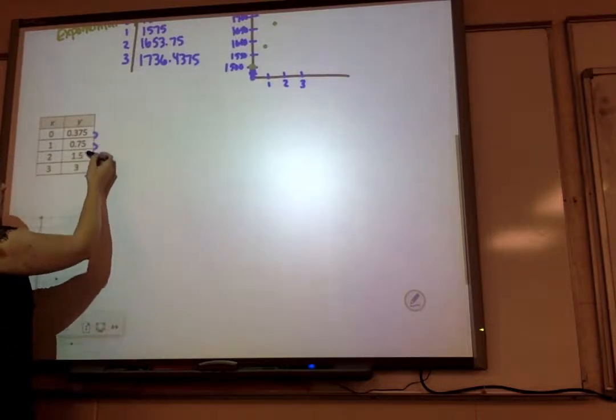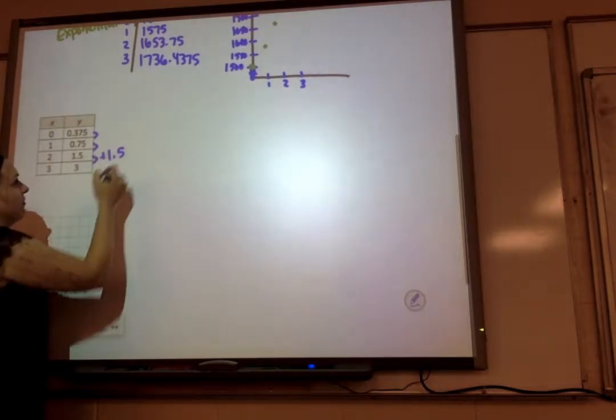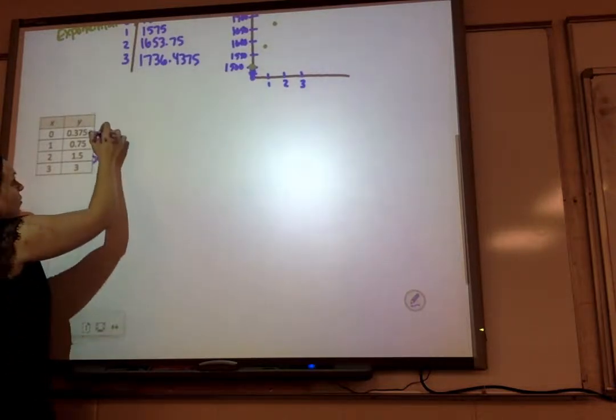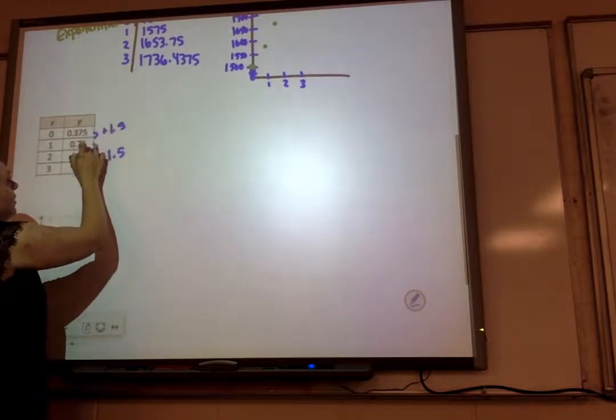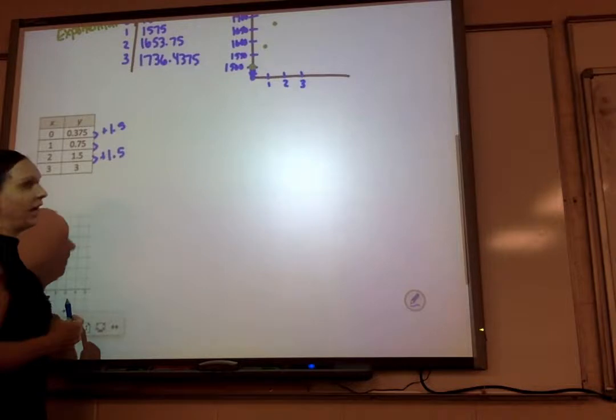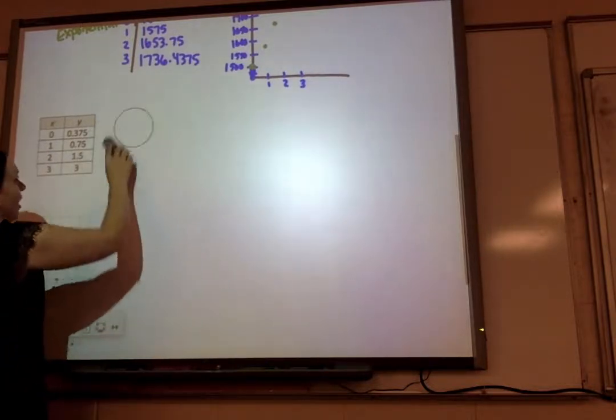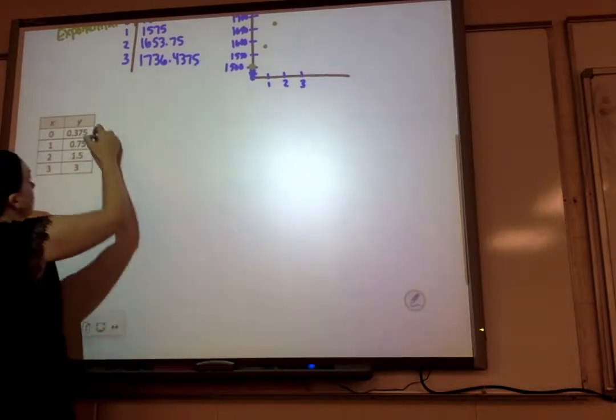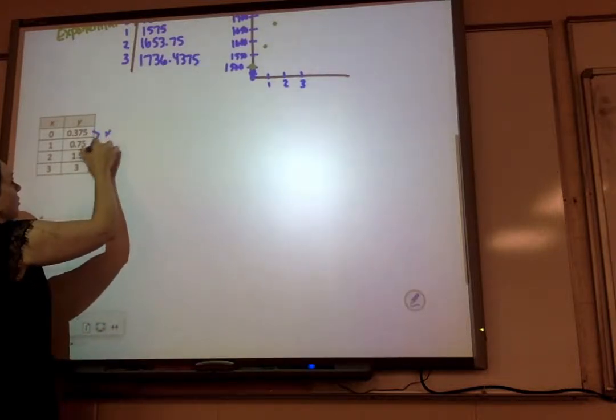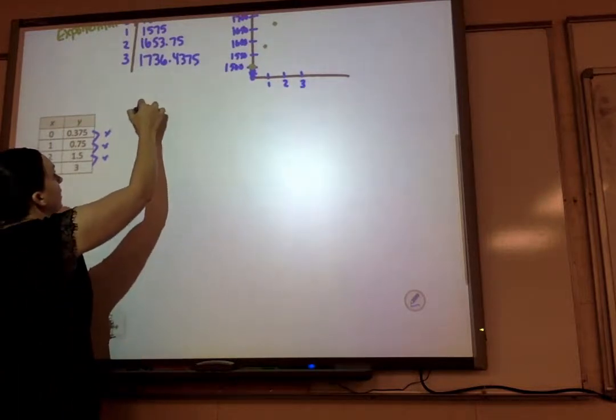I can see right here, from the 1.5 to the 3, I'd be adding 1.5, but that doesn't work up here. Adding 1.5 here does not give you 0.75 from 0.3. So we're not adding, we must be multiplying by some number. So I can already tell it's going to be exponential.